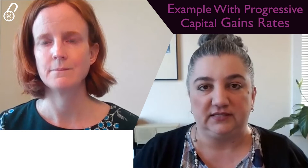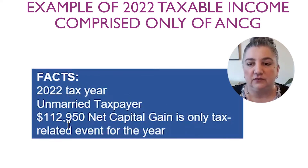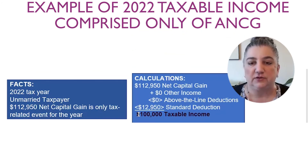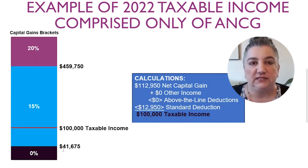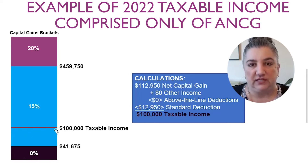Let's take a look at a simple example. For the 2022 tax year, the taxpayer has $112,950 of adjusted net capital gain, and that's the taxpayer's only tax-related event for the year — no other income, no deductions other than the standard deduction. When you compute the taxpayer's taxable income, it comes to $100,000.